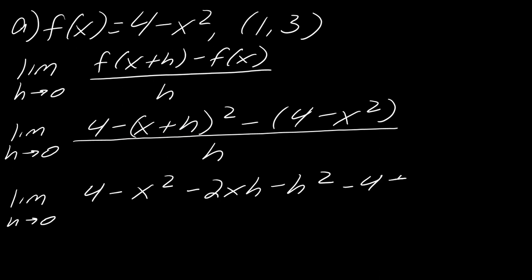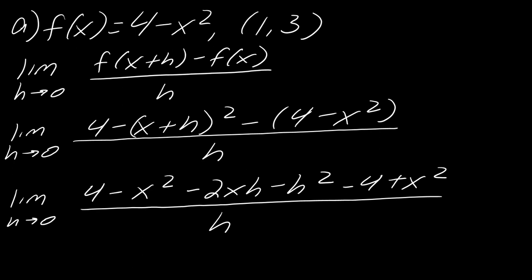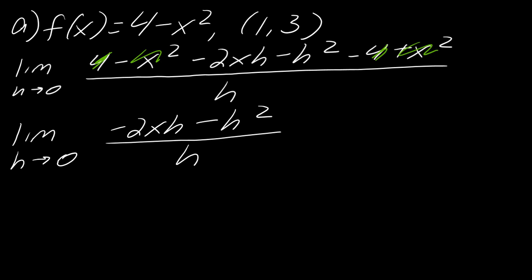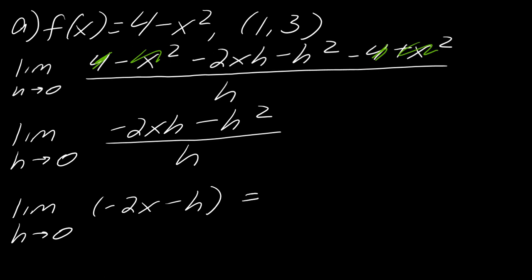Make sure you don't forget that the minus sign distributes to all the results. Then this is minus 4 plus x squared, all over h. You'll notice the 4s drop out and the x squareds drop out. So this gives me the limit as h approaches zero of negative 2xh minus h squared, divided by h. Dividing each part by h, I'm left with the limit as h approaches zero of negative 2x minus h. Now I can take the limit, which equals negative 2x.